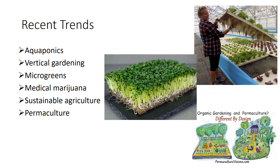Recent trends include aquaponics, where fish like tilapia are raised and their wastes are used to fertilize hydroponic vegetables. Growing more in small spaces is becoming popular, especially through vertical gardening with hydroponics—the use of soilless media. The microgreens and specialty foods industry is growing. Medical marijuana and CBD oil is a rapidly expanding industry. People are wanting to be more holistic about their food, making organic and sustainable growing a trend. Small growers are increasingly creating permaculture farms in a whole-system approach similar to an ecosystem.